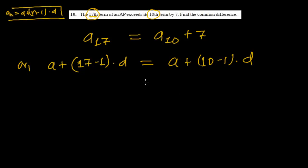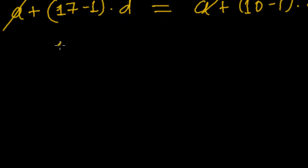So here a and a will be cancelled. 17 minus 1, that is 16d, equals to 10 minus 1d, that is 9d, and here is plus 7.